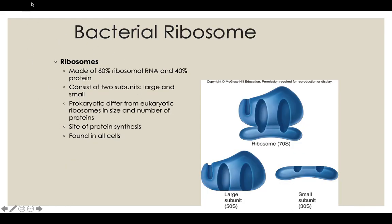Prokaryotic ribosomes are 70S; eukaryotic are 80S — the 'S' refers to Svedberg units, measuring how fast they spin in a centrifuge. The ribosome works like a hamburger bun: the large and small subunits hold the mRNA strand, amino acids are added one by one, and the growing protein chain is pulled through. Ribosomes are how bacteria — and eukaryotes — make proteins.